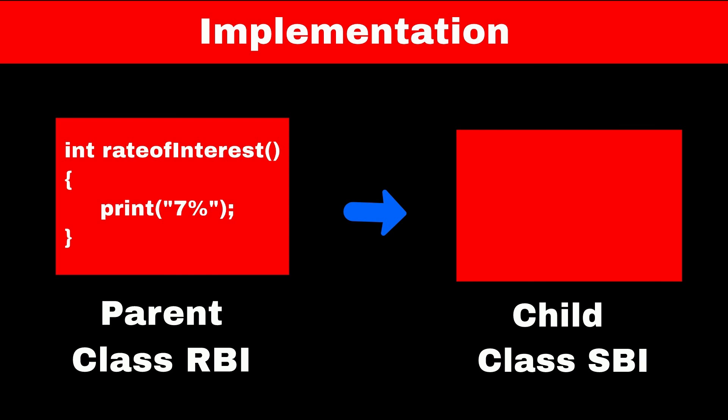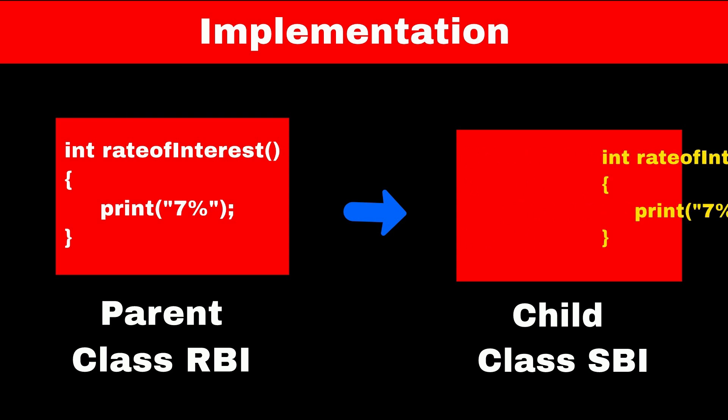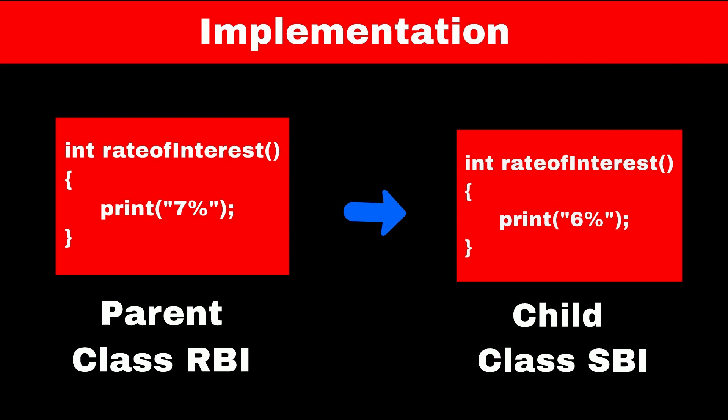But all banks can change the rate of interest based on their strategy. Consider SBI class, which is a child class of RBI. Since SBI is a child class, the rate of interest method is already present in it, but we can redefine it to print 6% as the interest rate. So the child class has provided its own specific implementation of the method defined in the parent class. This concept is called method overriding.